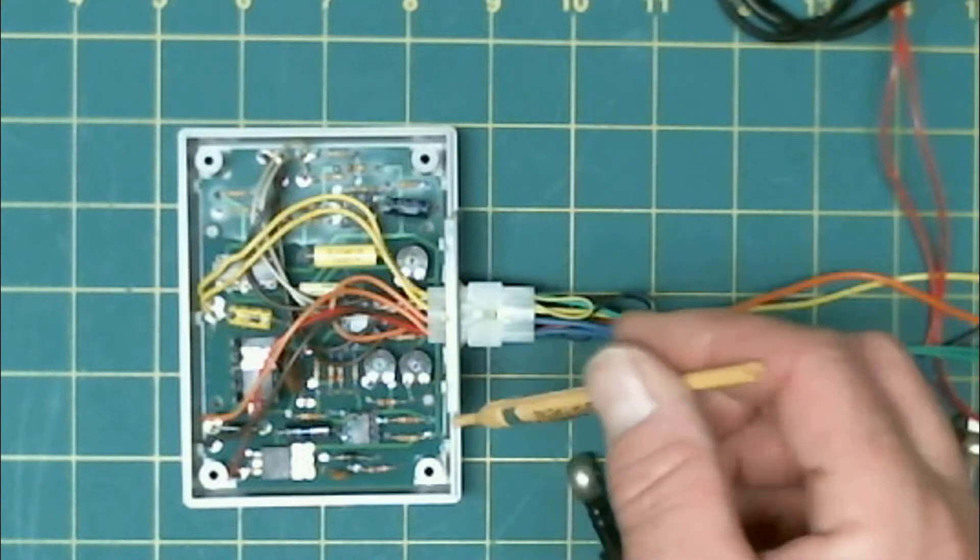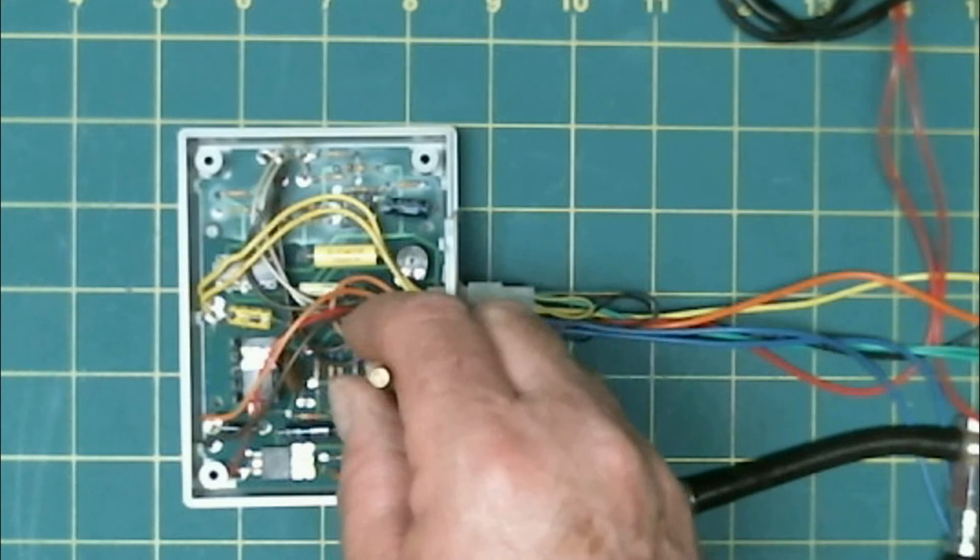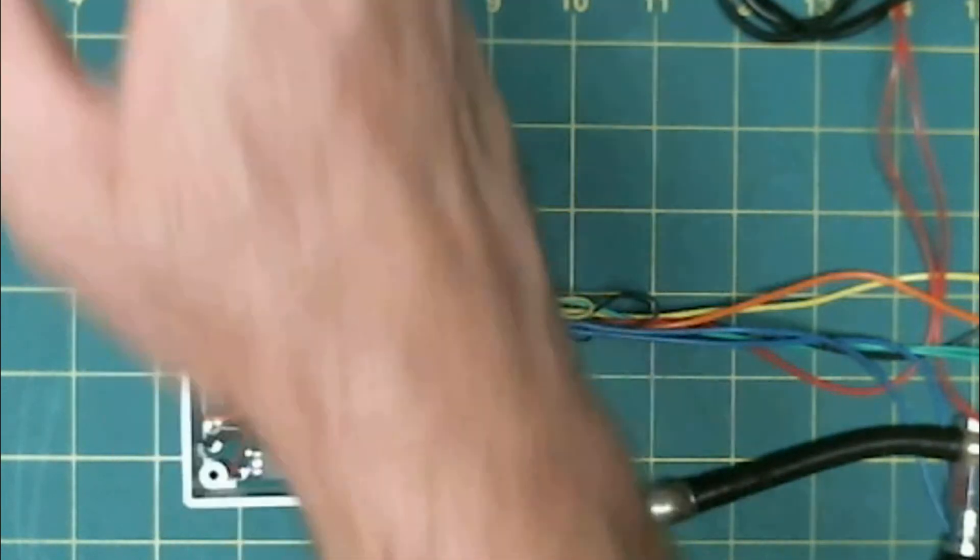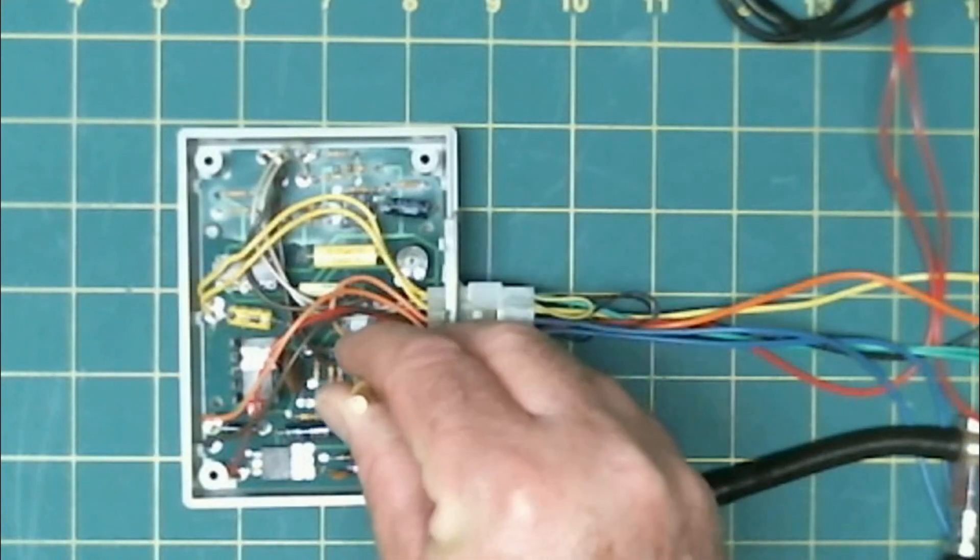Next, we want to set the duty cycle when it is in closed loop but with no input. And that duty cycle should be 50%. We set that with this potentiometer right here.